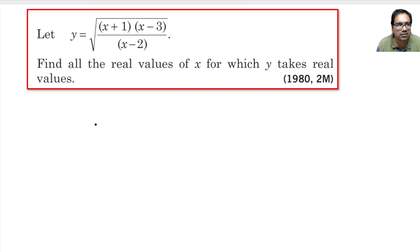Now let us use the sign method. We have minus 1, 2, and 3. So, let us write the numbers like minus 1, then 2 and 3. We have x + 1, we have x - 3, and we have x - 2.